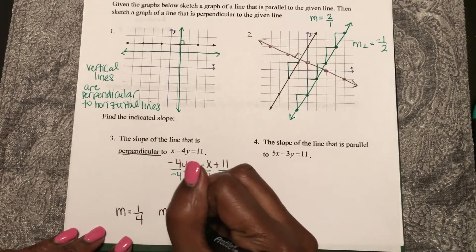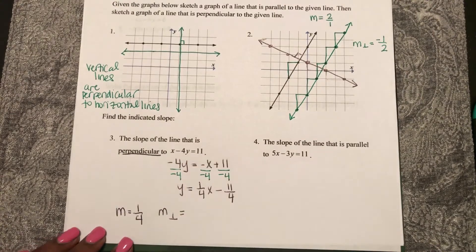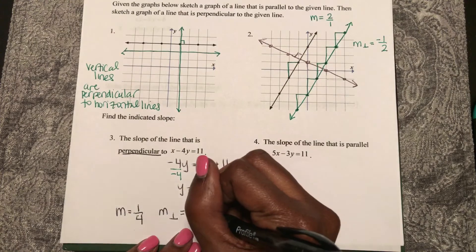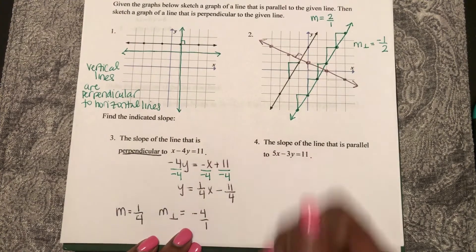So the slope of the perpendicular line is going to be the opposite reciprocal, negative 4 over 1.